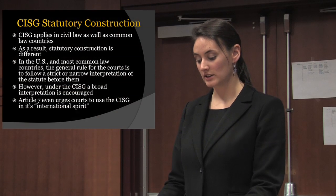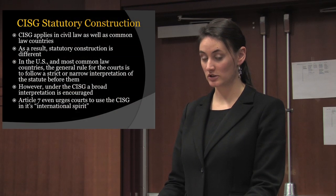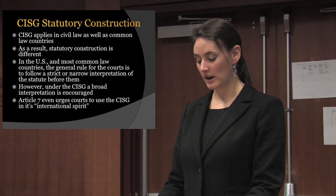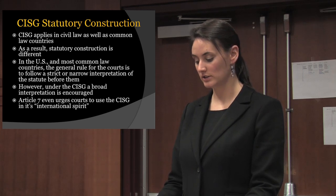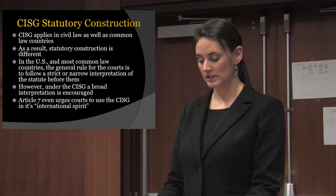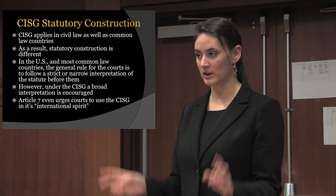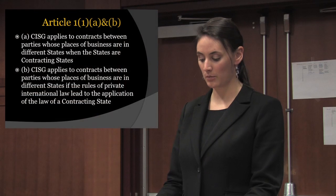Because the CISG applies to several different nations — those with both civil and common law governments — the statutory construction of the CISG is unique. Unlike the laws in the United States, the CISG calls for a broad interpretation of its provisions. Article 7 of the CISG encourages courts interpreting contracts to be mindful of an international spirit, encouraging universal standards. These universal standards apply to companies in both developing and industrial nations, allowing for greater equality among the companies.